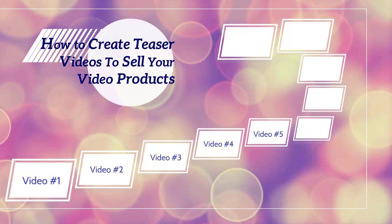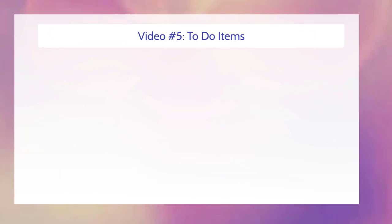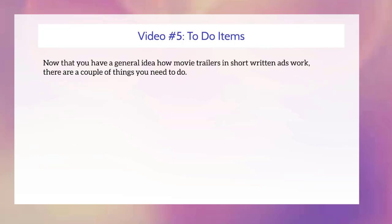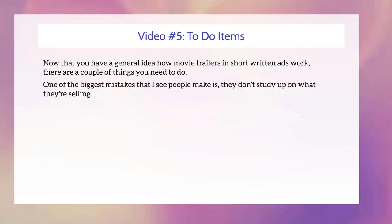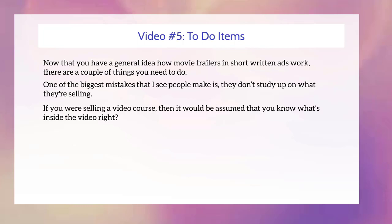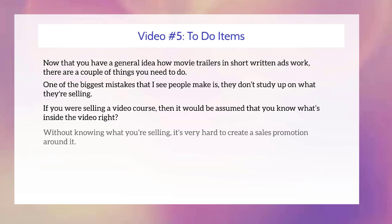Hello and welcome back. This is video number five, and we're going to talk about a few to-do items you need to accomplish before moving on to the next video. Often these are the most crucial in helping you figure out what your outline looks like and what snippets to extract from the video course. One of the biggest mistakes I see people make is they don't study up on what they're selling. If you bought private label rights to a video course and you did not watch it, that would be one of the big mistakes you don't want to make.